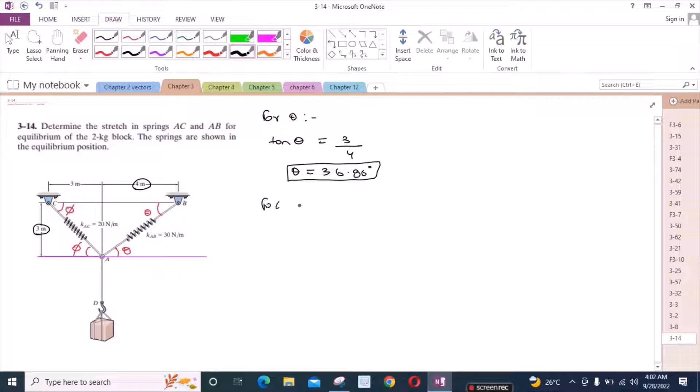Now for phi, we can again use the ratio of tan phi. Now the perpendicular is 3 divided by the adjacent which is also 3. So from here, phi is equal to 45 degrees. Now we have found the angles.